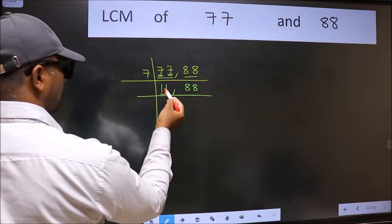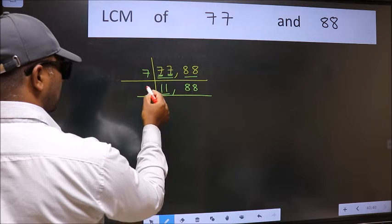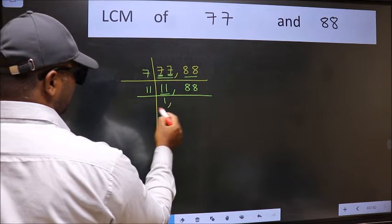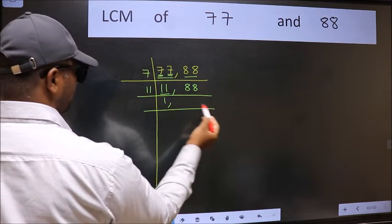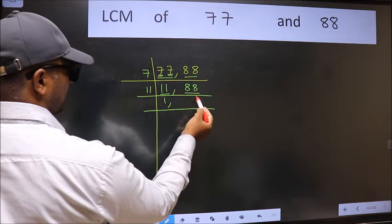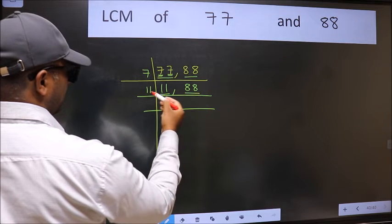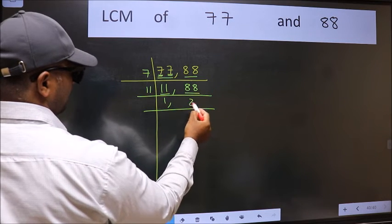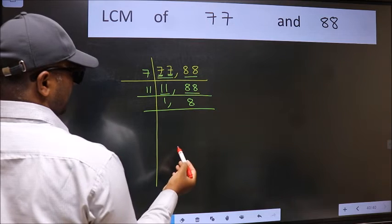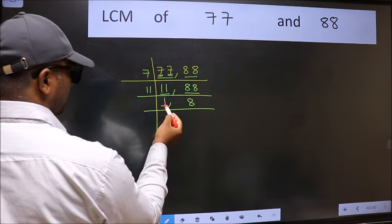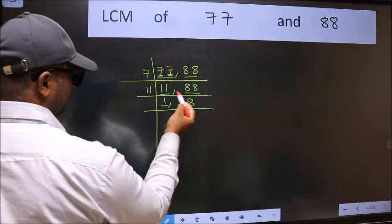Now here we have 11. 11 is a prime number, so 11 needs 11. The other number is 88 — when do we get 88 in the 11 table? 11 times 8 is 88. Now we got 1 here.